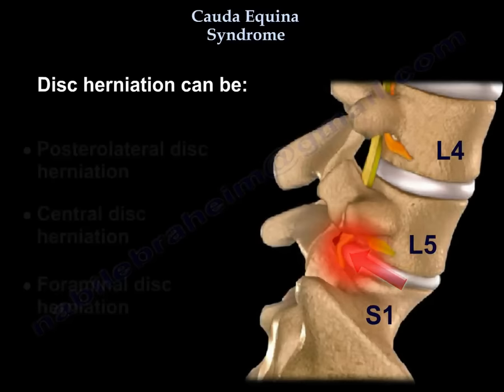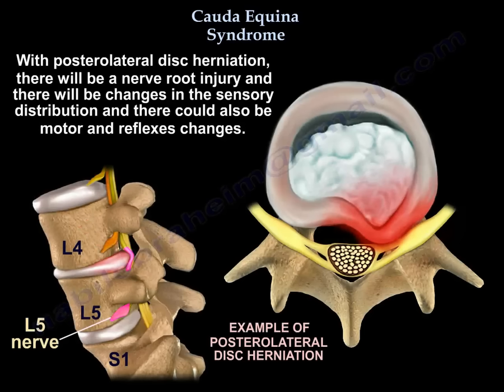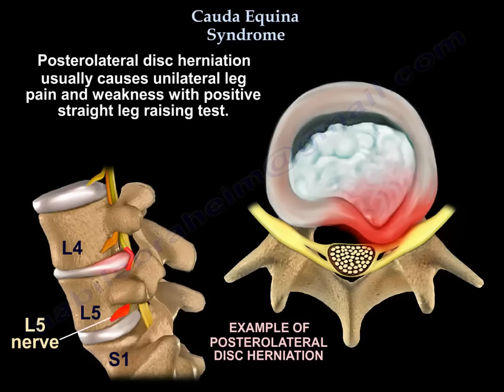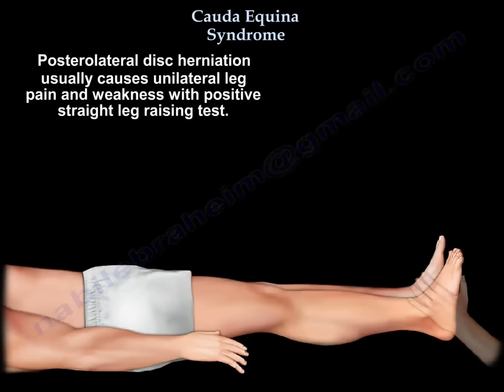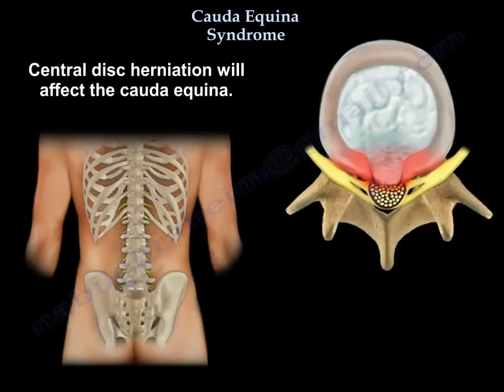Disc herniation can be posterolateral, central, or foraminal. The posterolateral disc herniation is the most common type. It causes nerve root injury, changes in sensory distribution, and possibly motor and reflex changes, usually affecting the foot and ankle. It is usually treated conservatively initially. Posterolateral disc herniation typically causes unilateral leg pain and weakness with a positive straight leg raising test. Central disc herniation will affect the Cauda Equina.